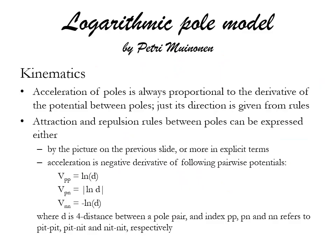Since we don't have mass a priori in this model, I'm not talking about dynamics but rather kinematics. The acceleration of poles is always proportional to the derivative of the potential between poles — each direction is given from the attraction-repulsion rules. These rules can also be expressed with equations: acceleration is the negative derivative of the following pairwise potentials, where the potential between two bits is the logarithm of d, between a bit and a nit it is the absolute value of the logarithm of d, and between two nits it is minus the logarithm of d.